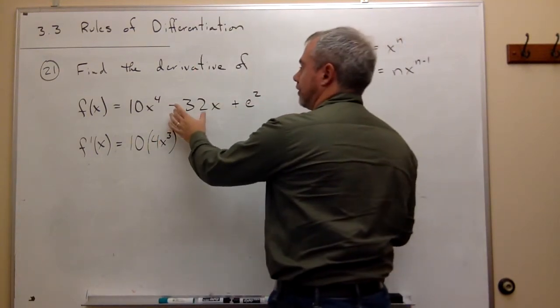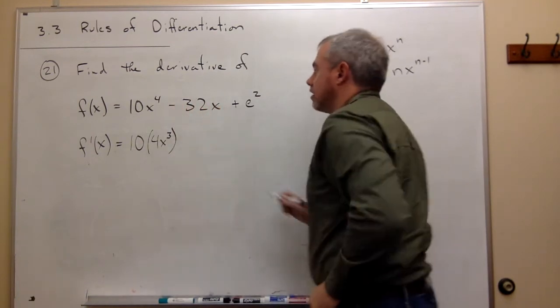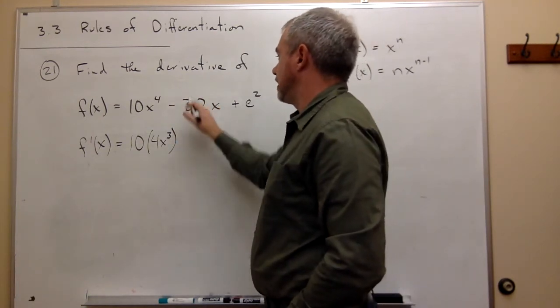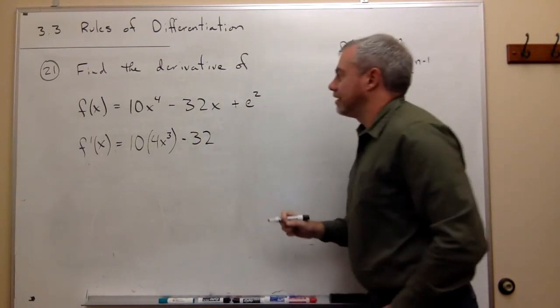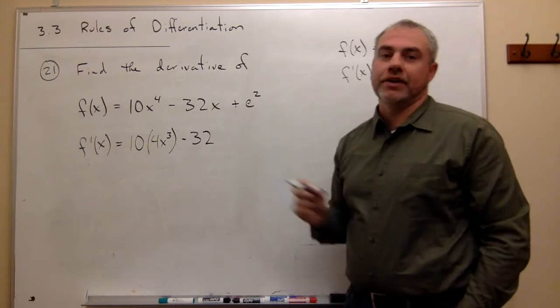Then I have the derivative of negative 32x. The derivative of negative 32x, there's a constant, negative 32, that just stays around. And then I need to ask the question, what's the derivative of x?